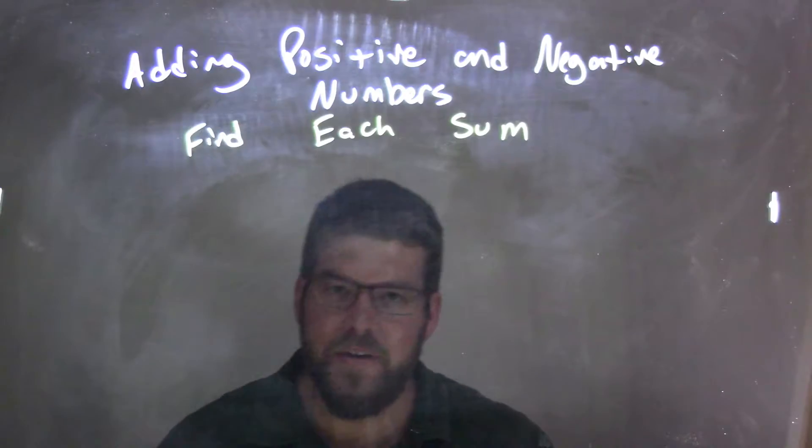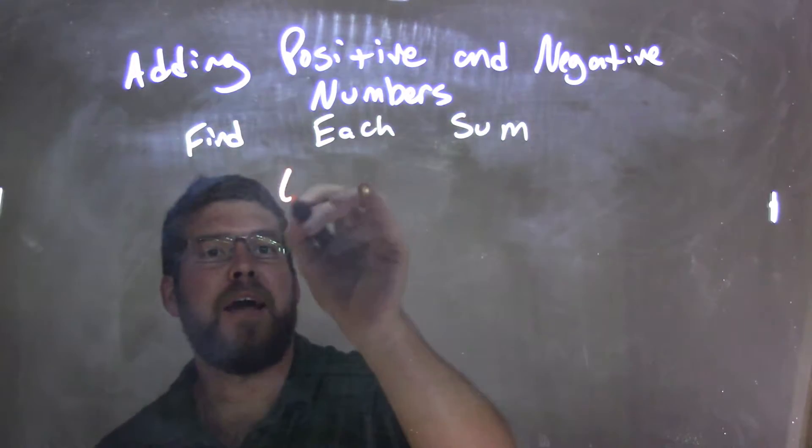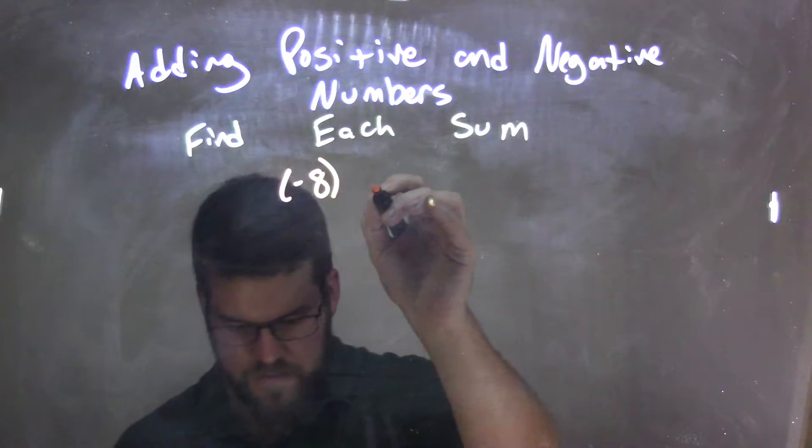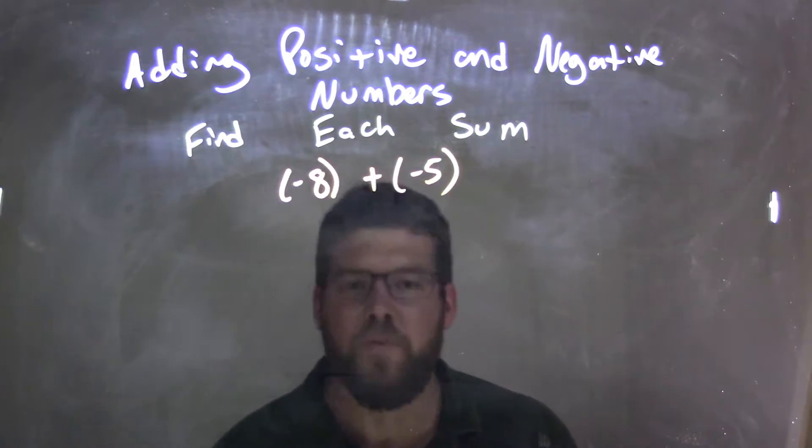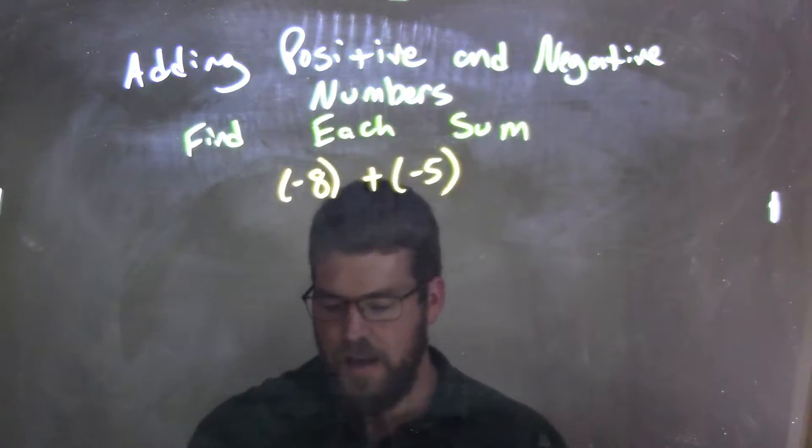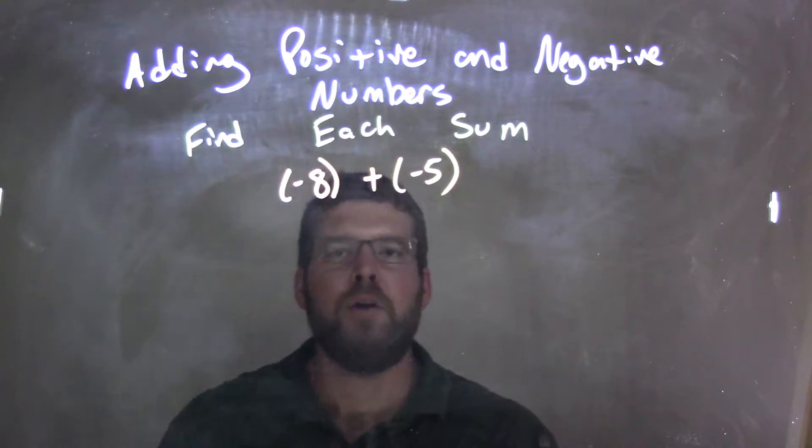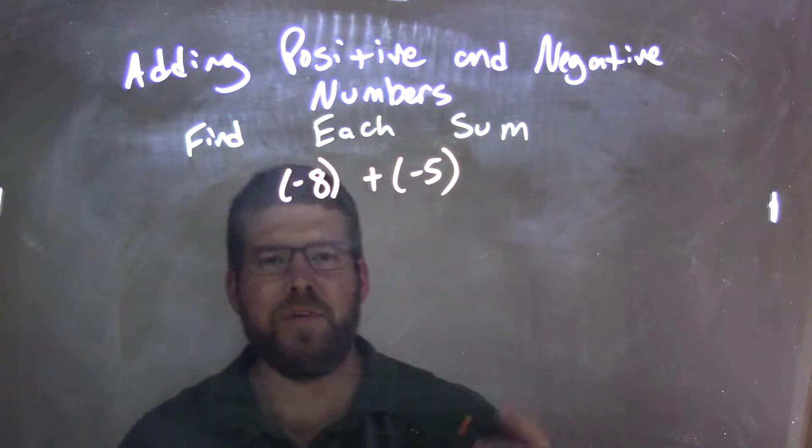So if I was given this expression: negative 8 plus negative 5. I want to add those together. Now here is where I want to use the number line.